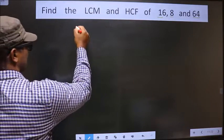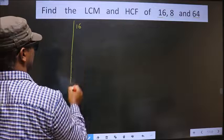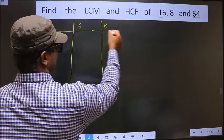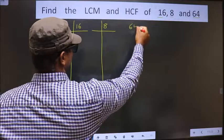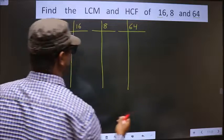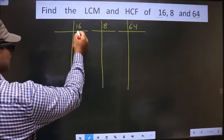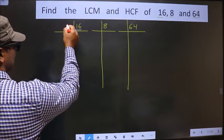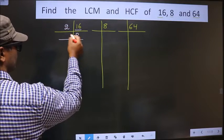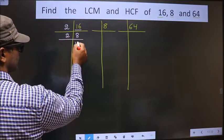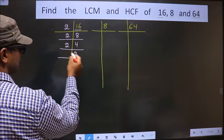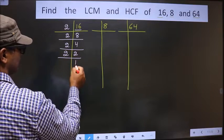That is 16, 8, 64. Now, here we have 16. 16 is nothing but 2 eights. 8 is 2 fours. 4 is 2 twos. 2 is a prime number, so we take 2 and 1.